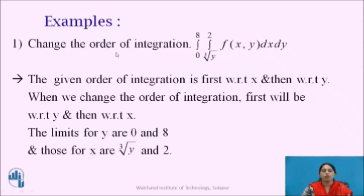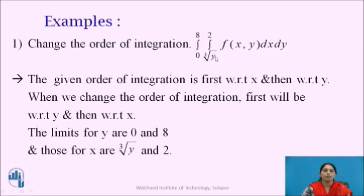First example: change the order of integration — integration from 0 to 8, integration from cube root of y to 2, f(x, y) dx dy. Here, observe the limits of this double integral. The outer integral has the limits constant, that is 0 and 8, and the inner integral has the limits cube root of y to 2.